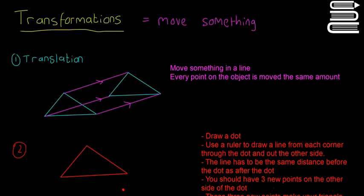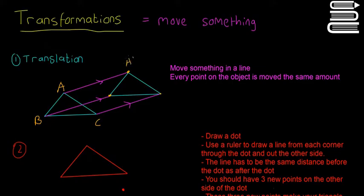So the first one is going to be called Translating Something, which is just moving something straight or moving it in a line, and basically you have to move every point in the object the same amount. So you start with a triangle like this one here — say triangle A, B, C — we're going to move each point, A, B, and C, by this amount shown by the purple line here and in this exact direction, to these three new points: A dash, B dash, and C dash.